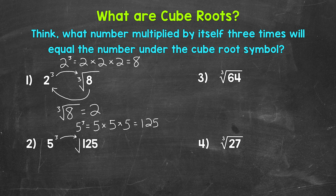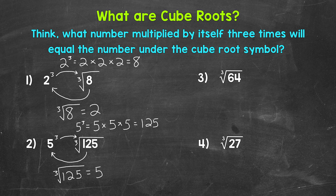Now let's find the cube root of 125. So what number multiplied by itself 3 times will equal 125? Well, 5. 5 is the cube root of 125. To recap number 2: 5 cubed equals 125. The cube root of 125 is 5 because 5 multiplied by itself 3 times equals 125. We can see the relationship between 5 cubed and the cube root of 125.